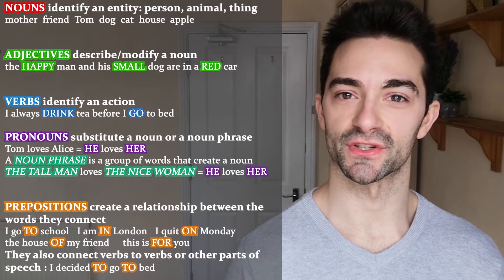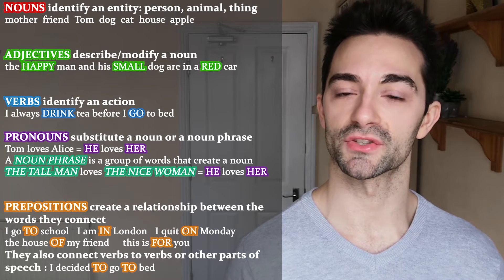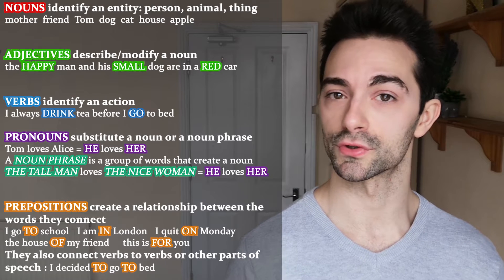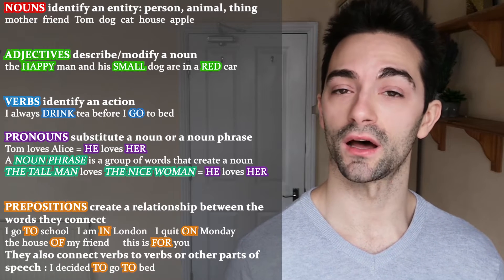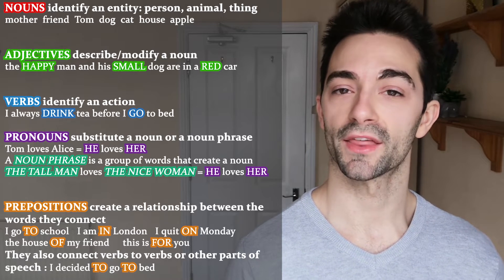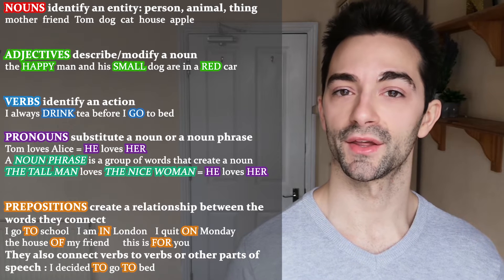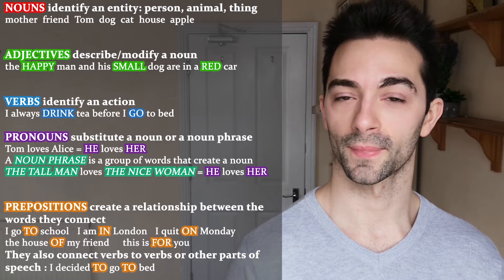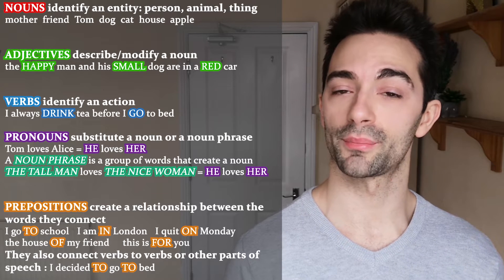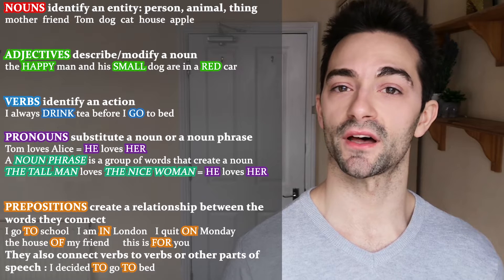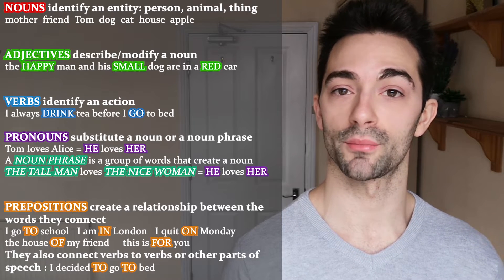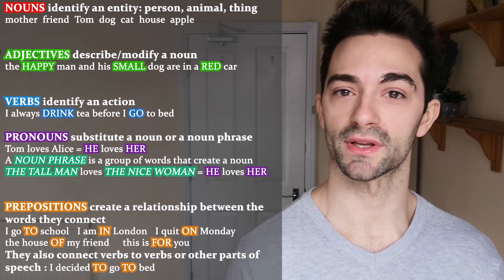We also have prepositions, which create a relationship between the parts of speech that they connect. It can be a relationship of space — I go to school, I am in London — of time — I quit on Monday — or any other kind of logical relationship — the house of my friend, this is for you. Prepositions can also connect verbs to verbs or verbs to other parts of speech. So if I say I decided to go to bed, the first 'to' connects a verb to a verb, and the second 'to' connects a verb to a noun.